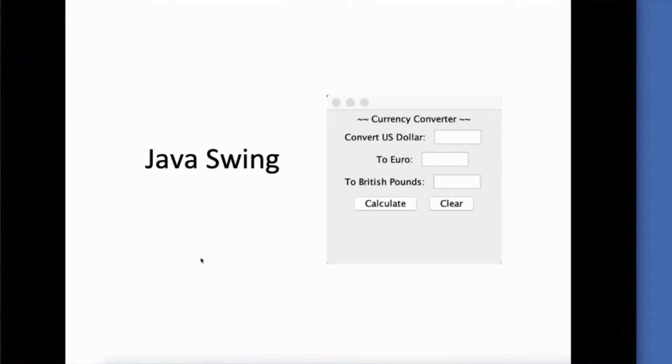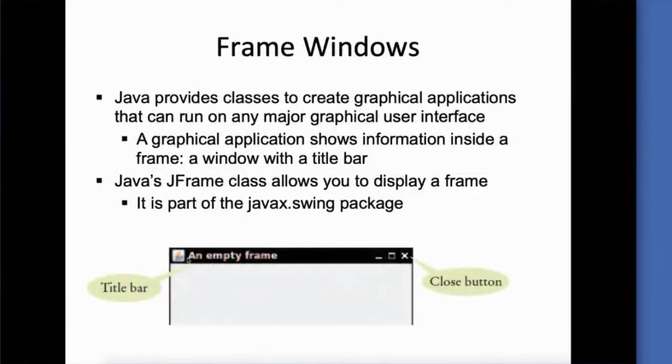Now for our purposes, the coolest thing about Java Swing is it really lets us start bringing in all of our components for our model, our view, and our controllers. So the first component when using Java Swing is the frame window. The frame window is called a JFrame. It's from the JFrame class and it's part of the Swing package.